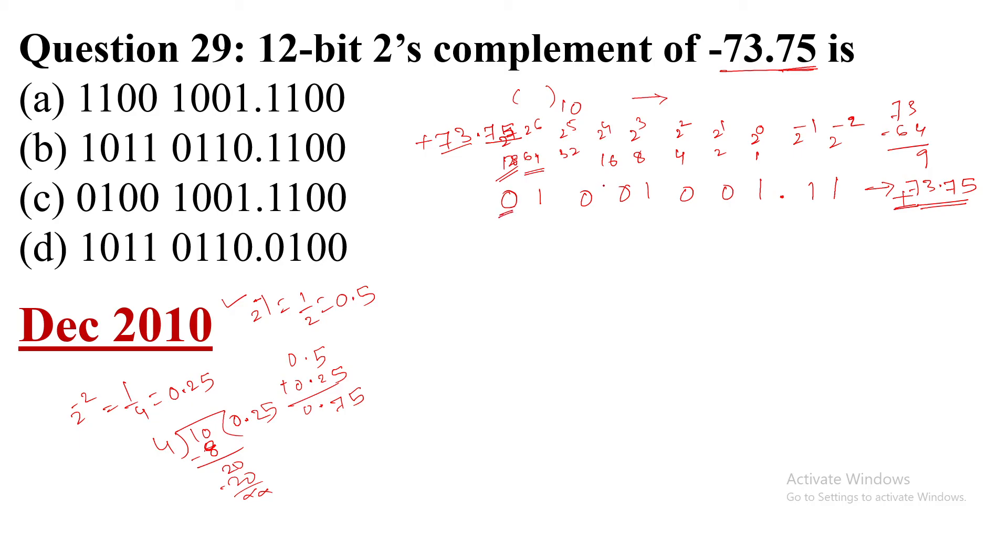And this is 12-bit representation. That means here 4 and this is 4, 4, 4, 8, and here we will put two more 0. So that's 4 plus 4 plus 4 is 12.